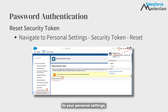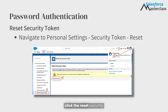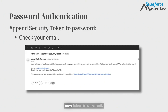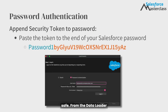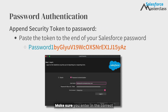Navigate to your personal settings, locate the reset my security token menu item, and click the reset security token button. This prompts Salesforce to send you a new token in an email. The token is 24 digits of letters and numbers. Copy it and store it somewhere safe. From the Dataloader password authentication screen, paste the token after your Salesforce password, make sure you enter in the correct username, and then click the login button.